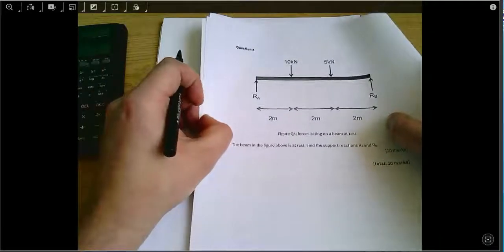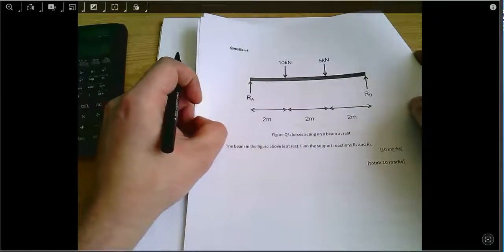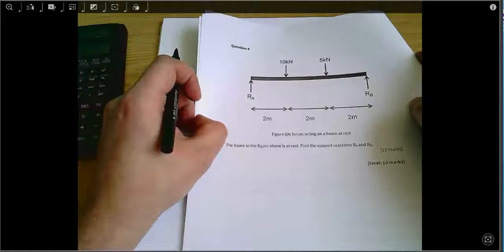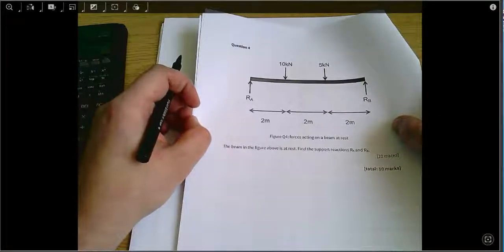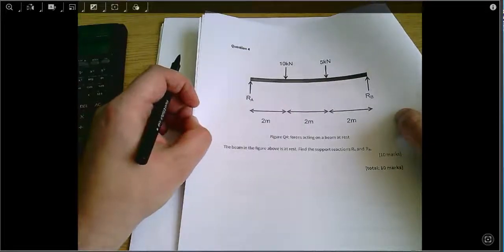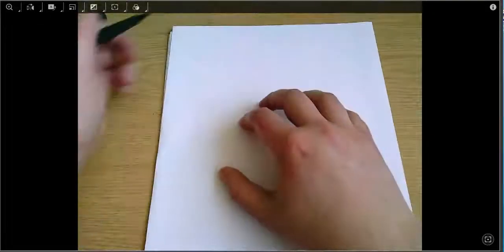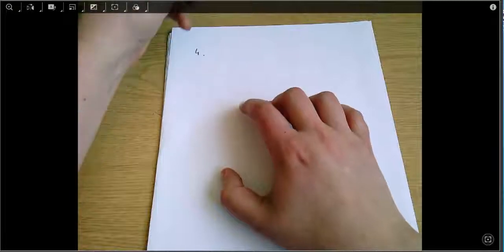This is Introduction to Mechanical Engineering 2017-18 exam question 4, and it's about a beam. We're asked to find the support reactions, so I'll start by writing my own version of the diagram as always.